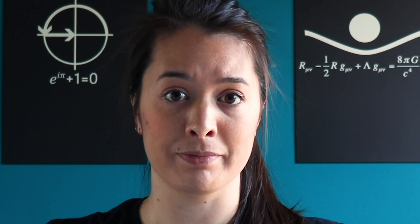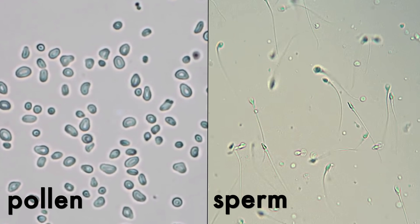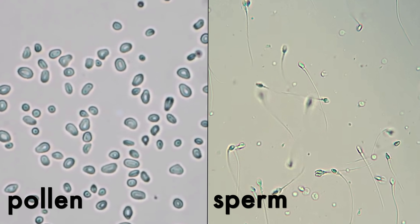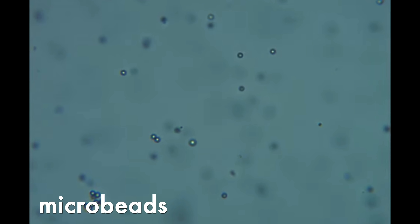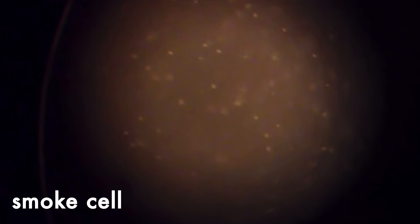Brown knew the plant the pollen came from was alive, so he wondered if perhaps the pollen might also be alive and actively swimming around like sperm. But when we repeat this experiment with things we're sure are definitely not alive, the jiggling is still there — it's not just limited to pollen. The defining feature that all of the jiggling specimens have in common is that the motion is totally random.